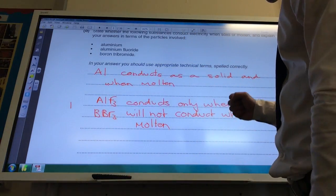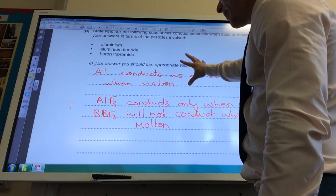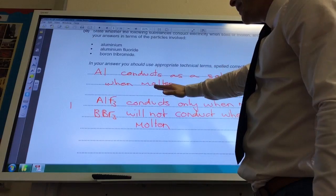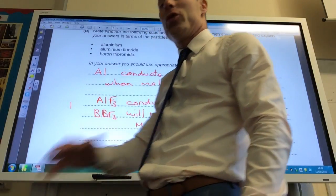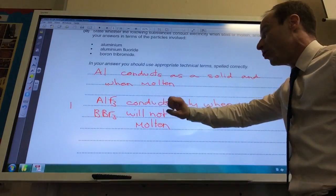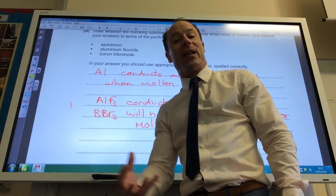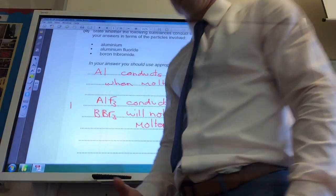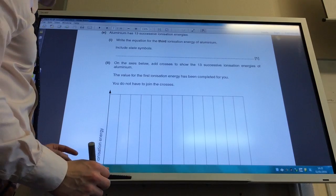So don't forget the explanations for each of those. Aluminium conducts only when molten because the ions can move when molten but not as a solid. Boron tribromide will not conduct when solid or molten because there are no charged particles that can move. Right, okay, so let's move on to question part E.